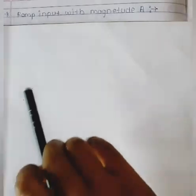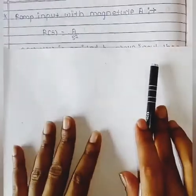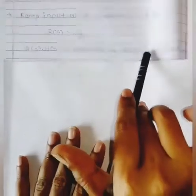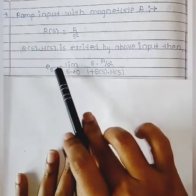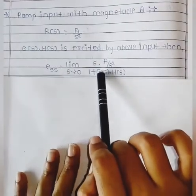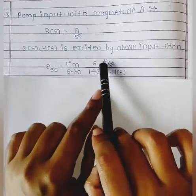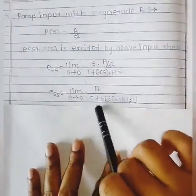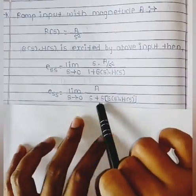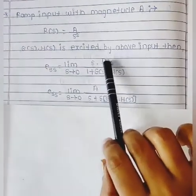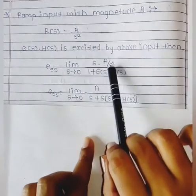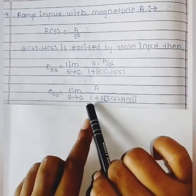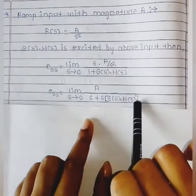After that we see for ramp input with magnitude A. For ramp input, R(S) is equal to A by S². So G(S) H(S) is excited by above input. Then steady state error for ramp input is limit S tends to 0, S dot R(S) — yahan A by S² put karenge — upon 1 plus G(S) into H(S). S aur S ek cancel ho gaya, to ek hi S bachega neeche, giving S plus S G(S) into H(S).